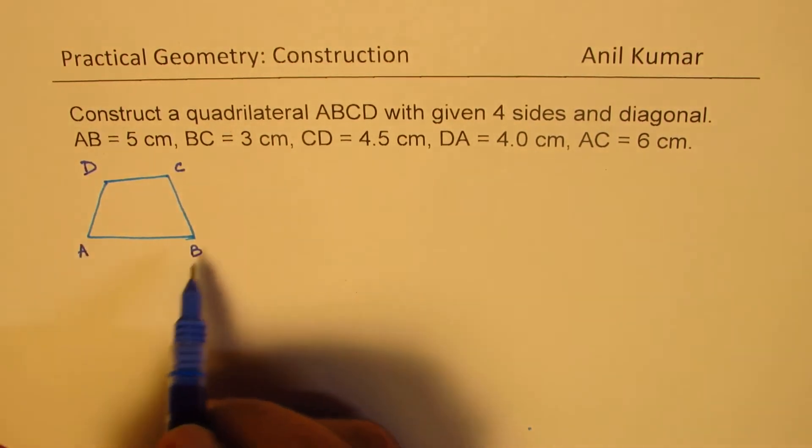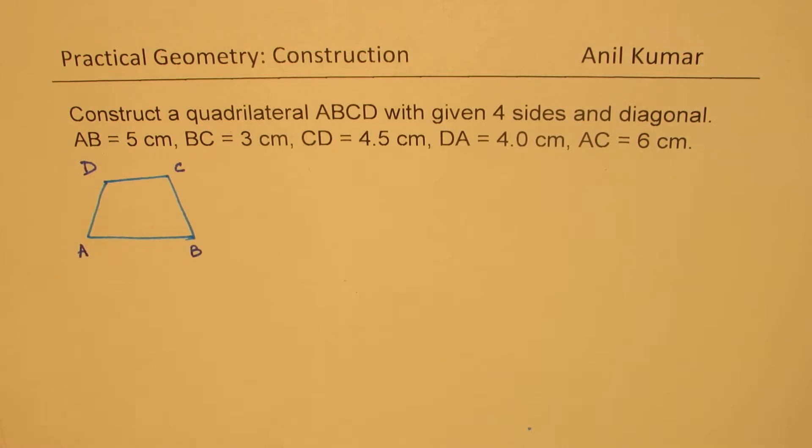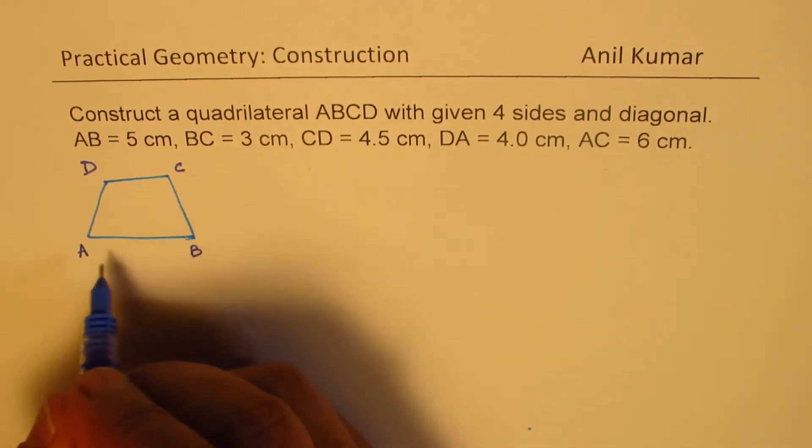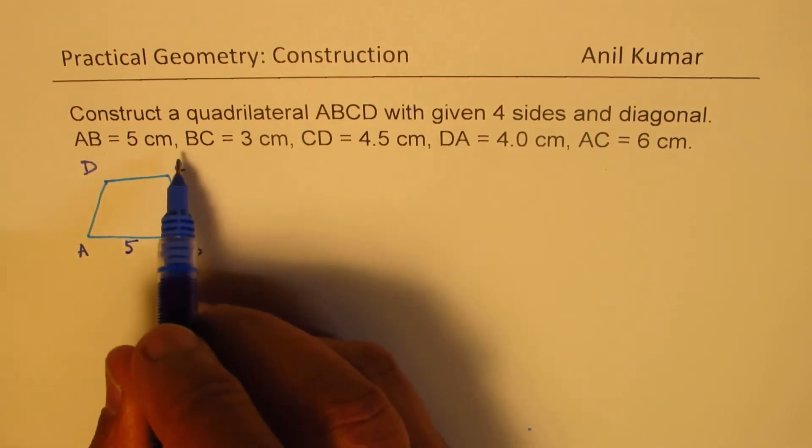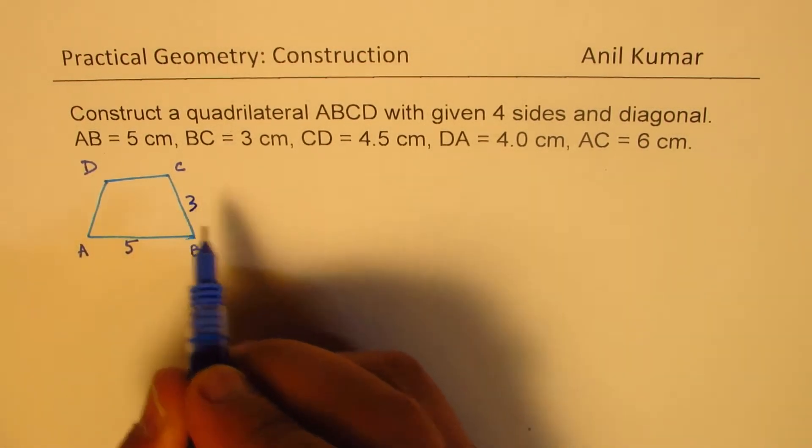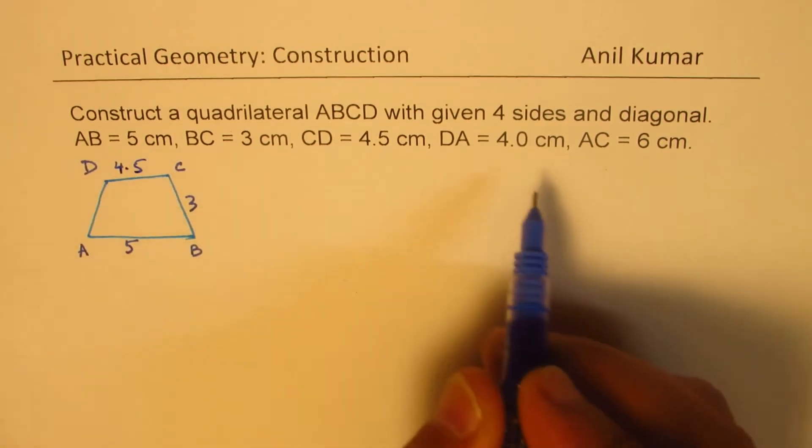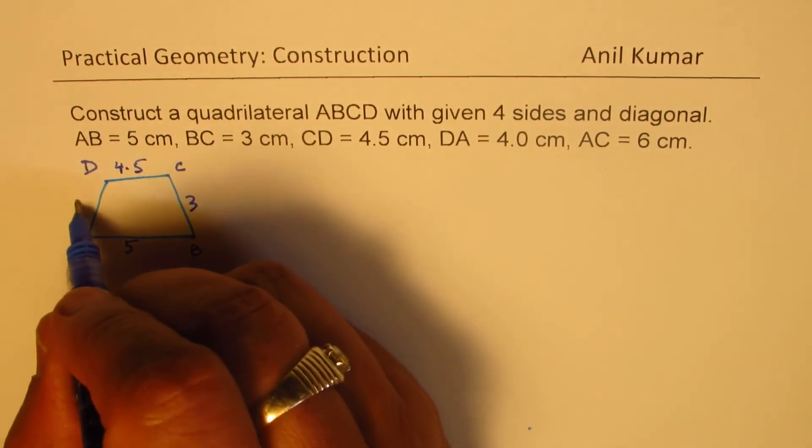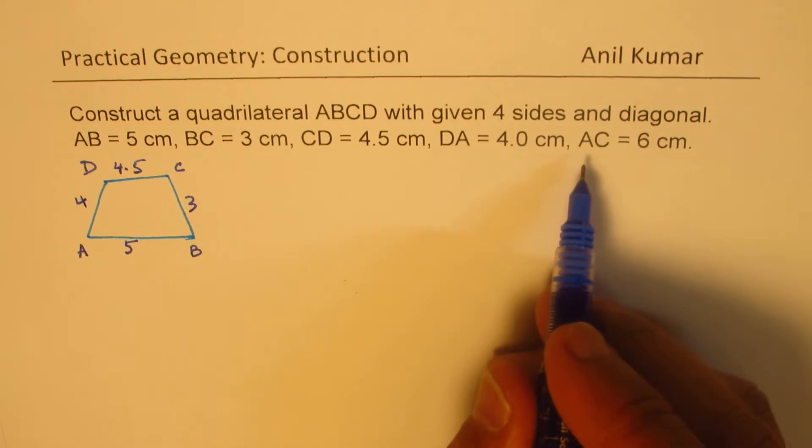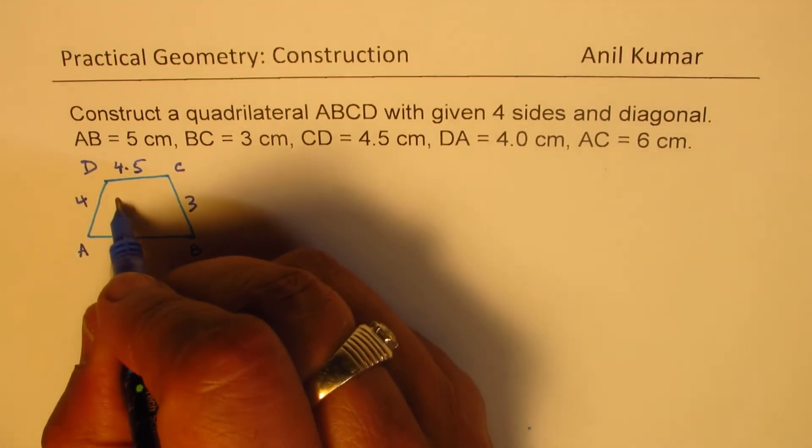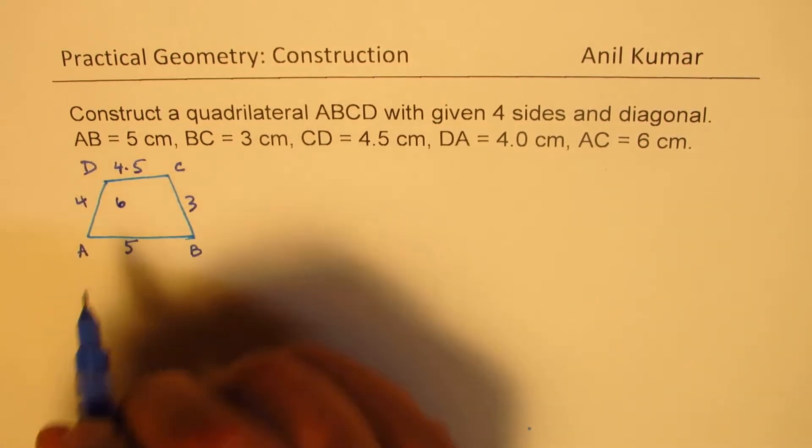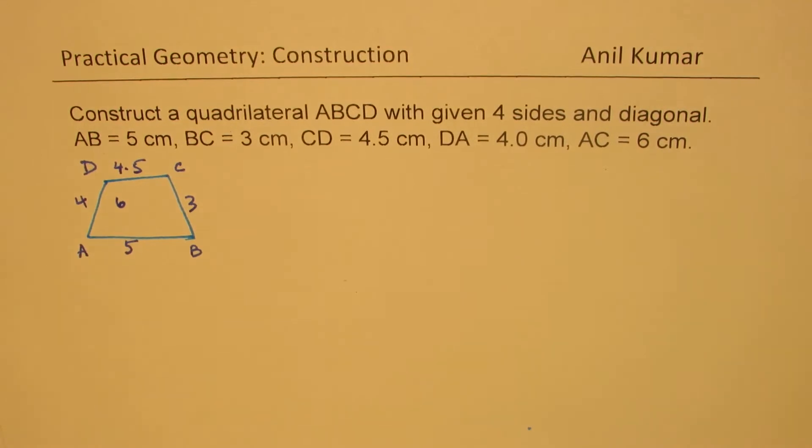Now let's write down what is given to us. A to B is 5 centimeters, B to C is 3 centimeters, C to D is 4.5 centimeters, and DA is 4 centimeters. The diagonal AC is 6. So that becomes a rough sketch for us.